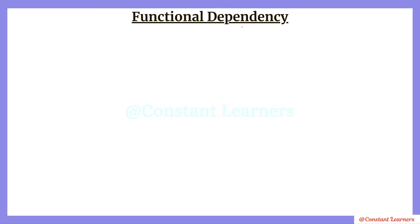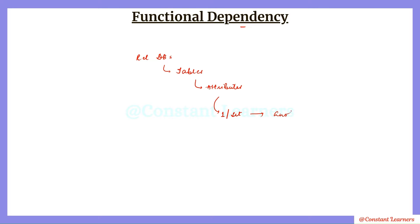Now, the word dependency means we're talking about some kind of dependence. We know that we are talking about relational databases, and relational databases have relations — that is, tables. Tables have columns, that is attributes. So we are talking about the dependency of attributes.